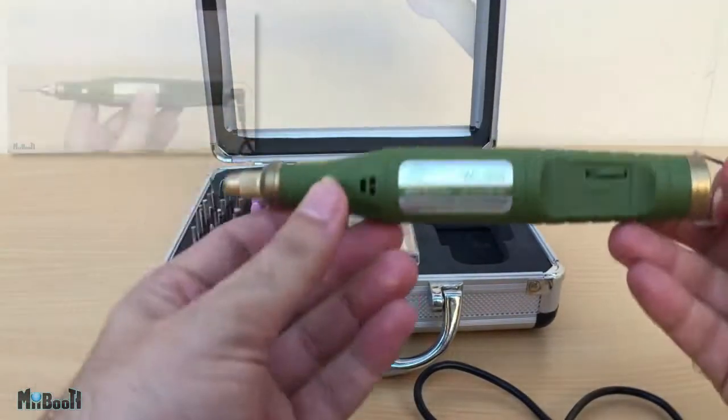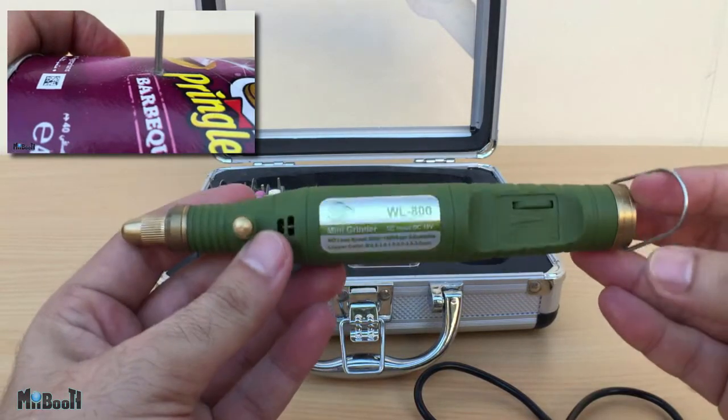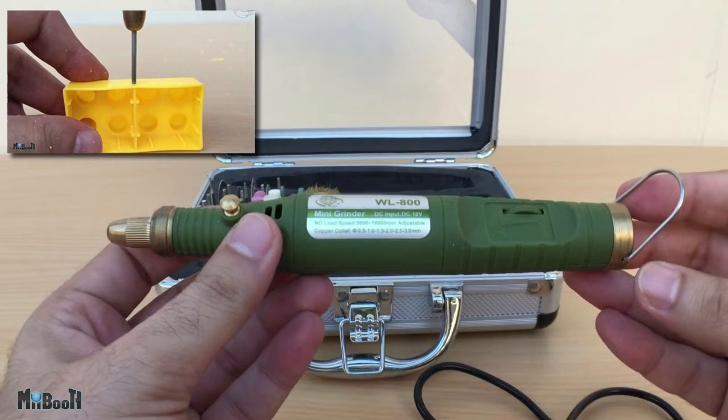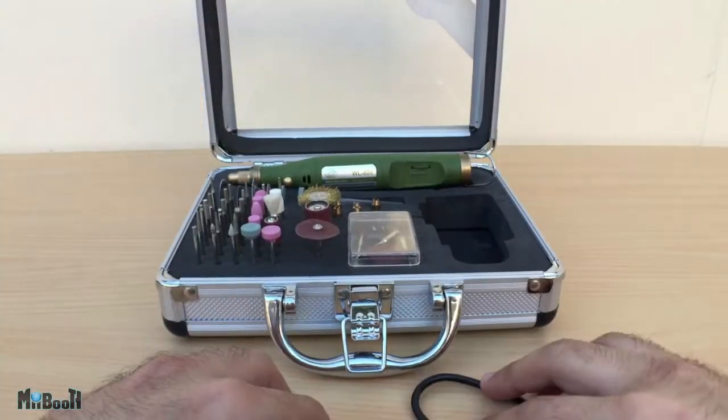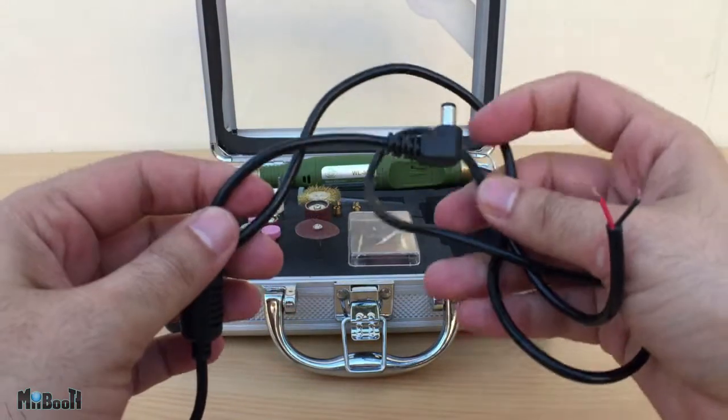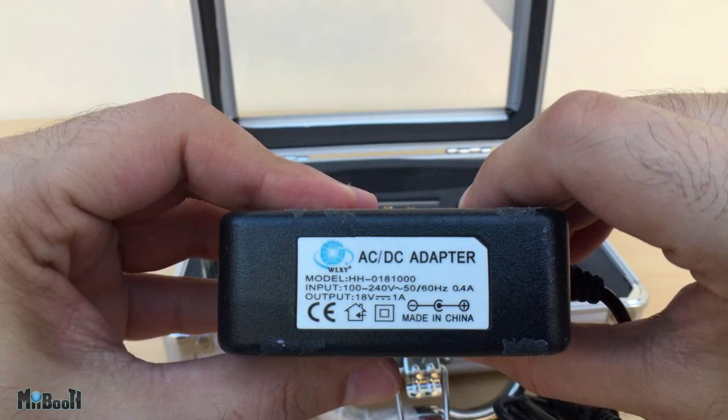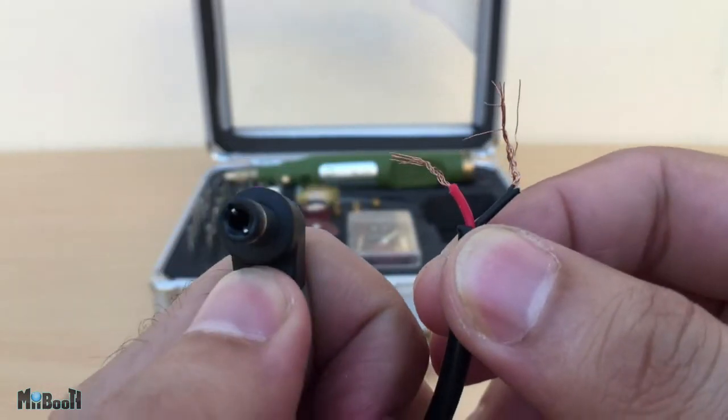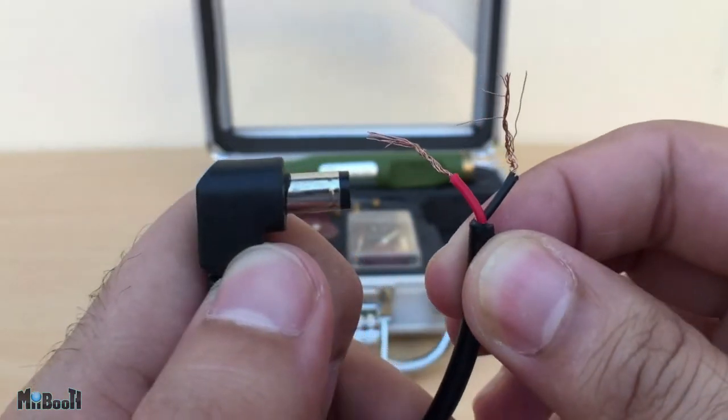You remember this mini drill which I reviewed a couple of weeks ago? If you have watched that video then you also know that the power adapter that came along with it blew up. However, since the wire was working fine, I cut it off and kept it just in case. According to what was written on the adapter, it supplied 18V and 1A of current to the drill. Now I'll be using this cable and some other things to make a simple and portable battery pack for the drill.